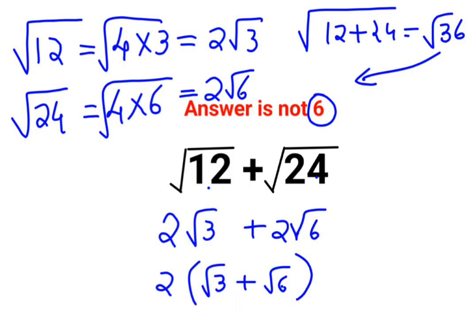Please don't make the mistake of clubbing these two like we had done in the first step. That's absolutely wrong. The final answer for this addition of two roots is 2 multiplied by the whole of √3 + √6.